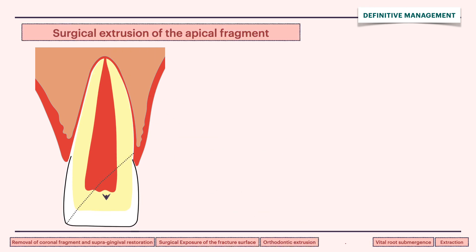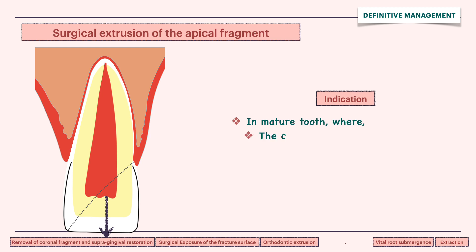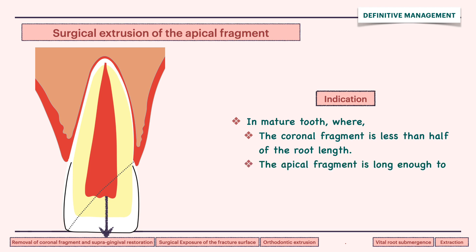In surgical extrusion, the fracture is surgically moved to a supra-gingival position. It is indicated in a matured tooth where the coronal fragment is less than half of the root length and the apical fragment is long enough to accommodate a post-retained crown.